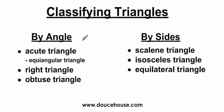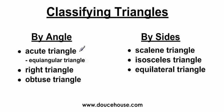When I say by angle, I mean the angle measures inside the triangles. For example, we have the acute triangle, the right triangle, or the obtuse triangle. Every triangle in the world, in the universe, can be classified as either an acute triangle, a right triangle, or an obtuse triangle. But I'm also going to mention a special kind of acute triangle called the equiangular triangle. This is something you might not be familiar with, so this is something you might want to pay attention to.